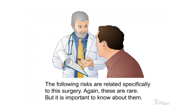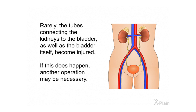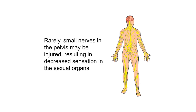The following risks are related specifically to this surgery. In rare cases, structures in the pelvis and abdomen may be injured during the procedure; this is more common if the patient has internal scars from previous surgeries. Rarely, the tubes connecting the kidneys to the bladder, as well as the bladder itself, may become injured, requiring another operation. In rare situations, the intestines and blood vessels could be affected, possibly requiring an immediate operation with a larger incision. Rarely, small nerves in the pelvis may be injured, resulting in decreased sensation in the sexual organs.